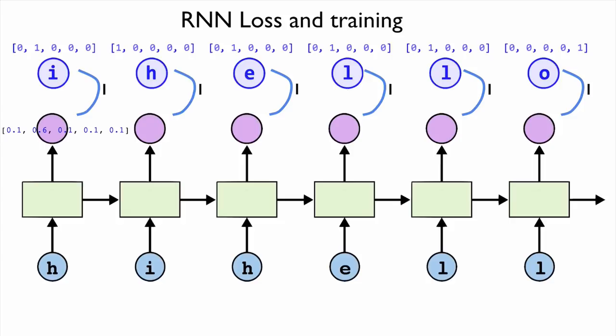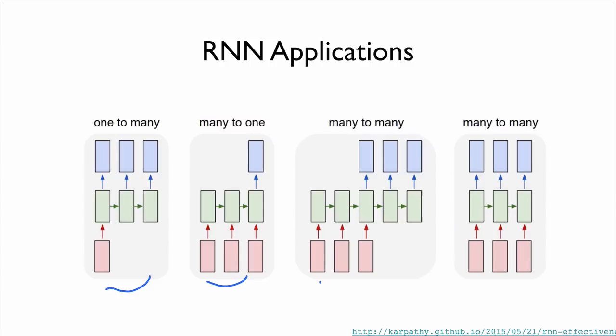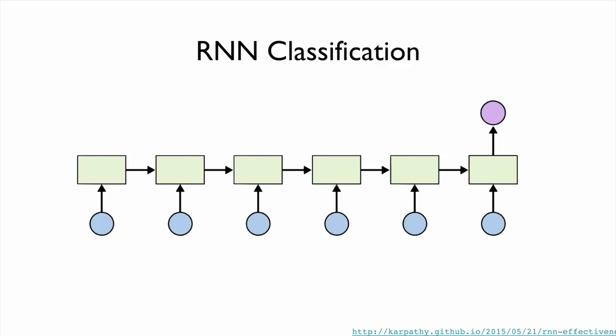More specifically, we have input of time series, and then each cell will produce output, and then we're going to compare this output with the given label and compute the loss. Based on this loss, we're going to train our model. This is the typical loss and training for the RNN. Because we can connect RNNs in different ways, we can think of many different types of models and applications.